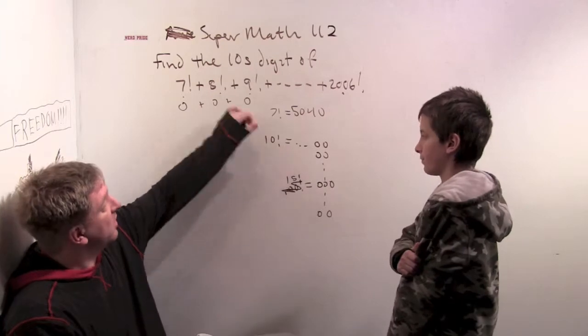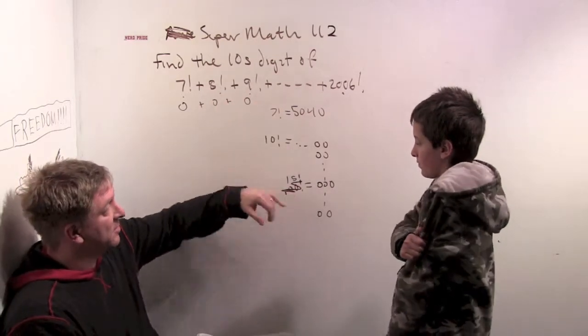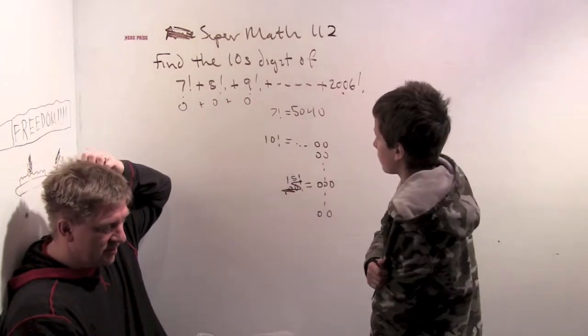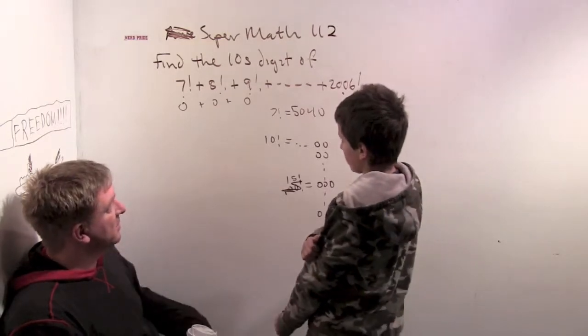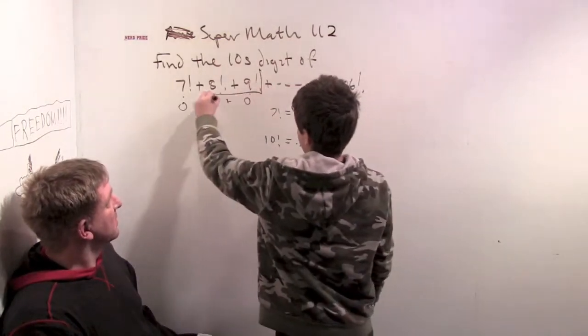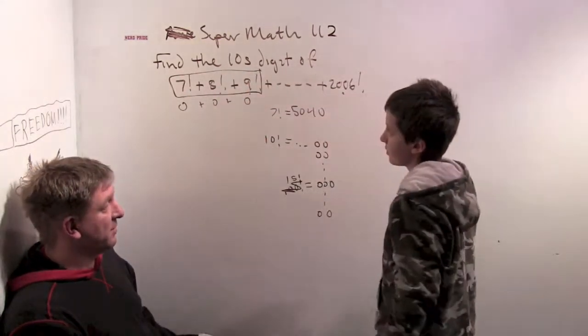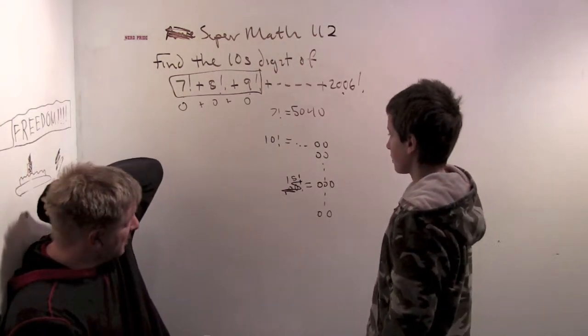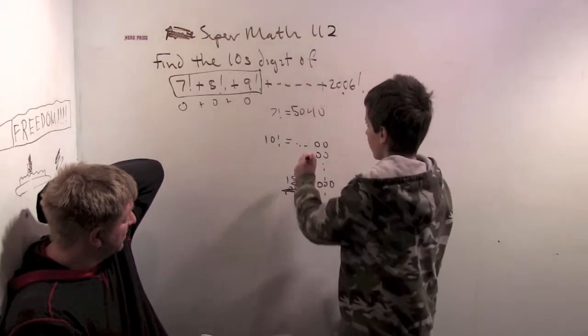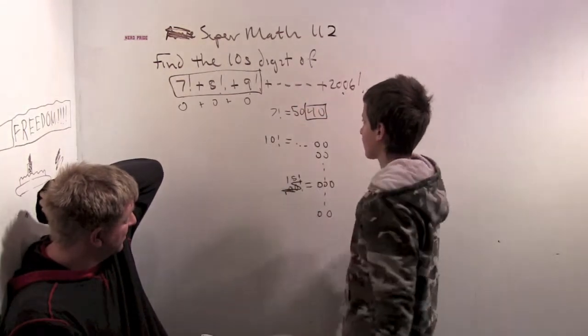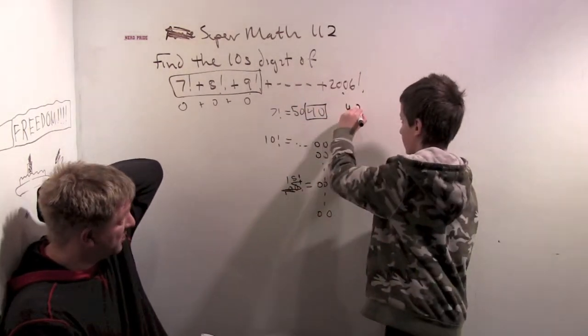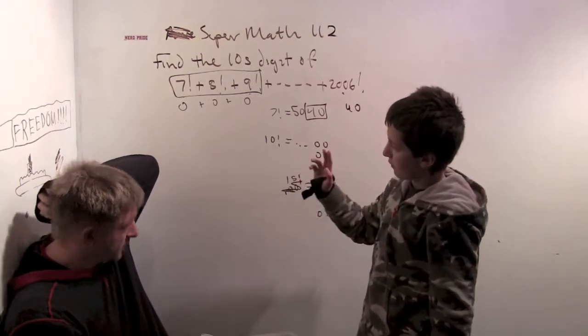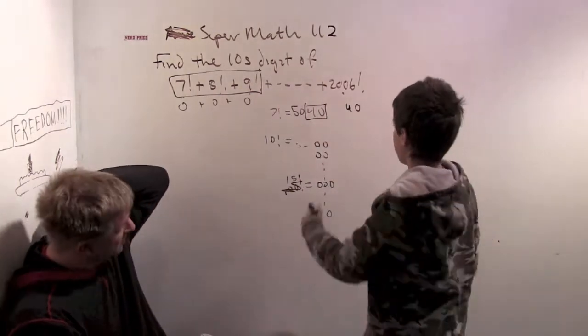Hey, ten factorial ends in two zeros, so all the factorials after that end in two zeros. So what do I have to do to look at the tens digit? Well, you just need 7 factorial plus 8 factorial plus 9 factorial. You just need this part. And you don't even need all of those, you just need the last two digits for each of them. Well, the last two digits of seven factorial is 40.